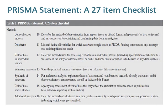Item 10 regarding data collection process is to describe the method of data extraction from reports, such as piloted forms, independently by two reviewers, and any processes for obtaining and confirming data from investigators. Item 11 regarding data items is to list and define all variables for which data was sought, such as PICO's, funding sources, and any assumptions and simplifications made. Item 12 regarding risk of bias in individual studies is to describe methods used for assessing risk of bias, including whether this was done at the study or outcome level, or both, and how this information is to be used in any data synthesis.